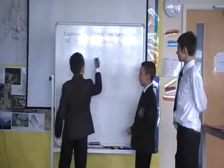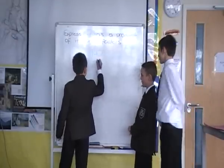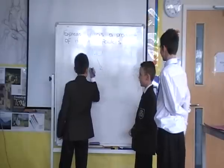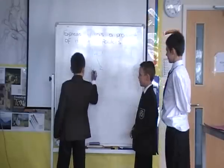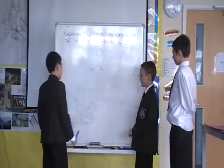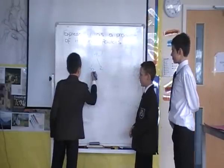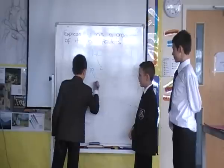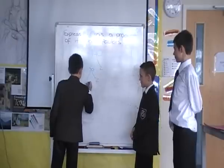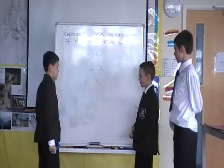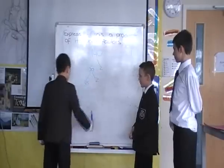140 can be divided by 2 and 70. And 70 can be divided by 2 and 35. 35 can be divided by 5 and 7.